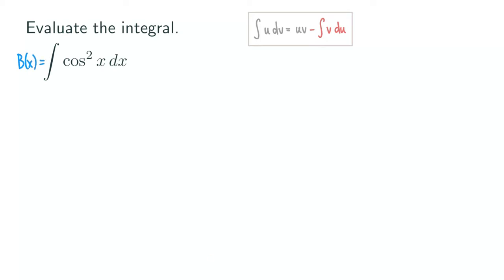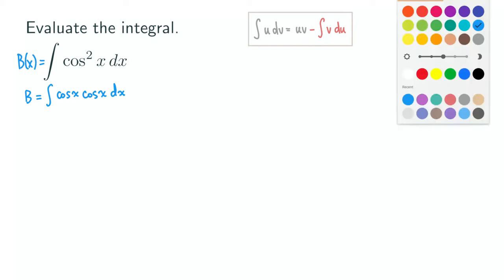So b of x means we don't have to keep writing this integral. We can write: b is equal to the integral of cosine of x times cosine of x, dx. Now that's a product, so we can set up the u, v, du, dv table for integration by parts.